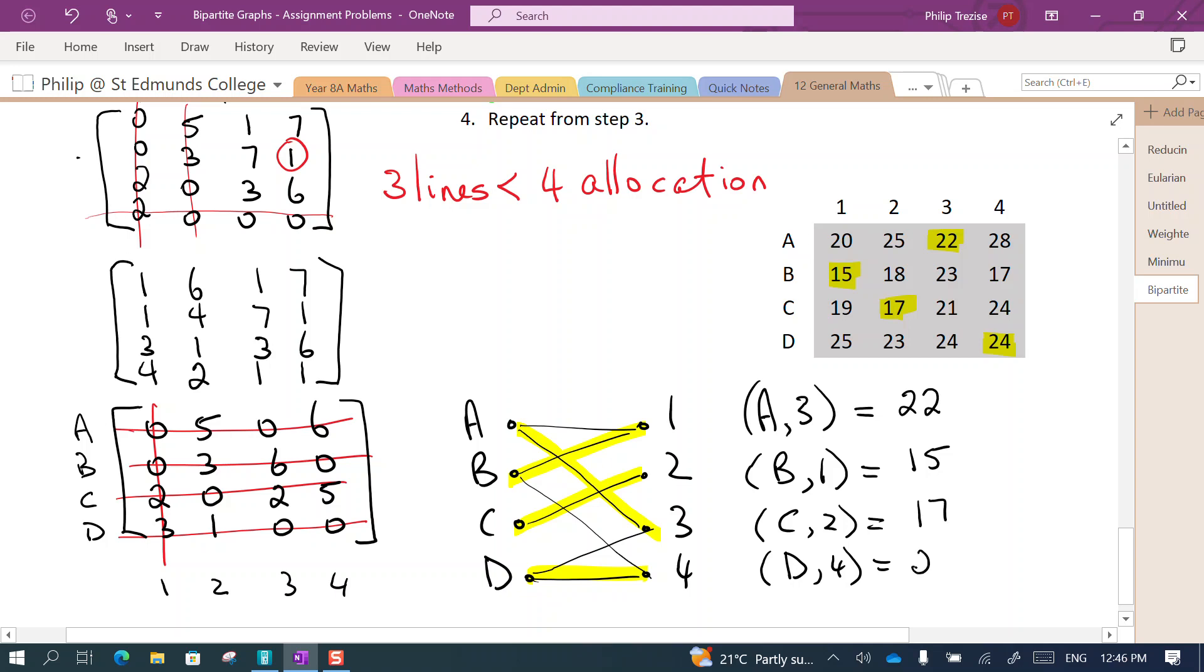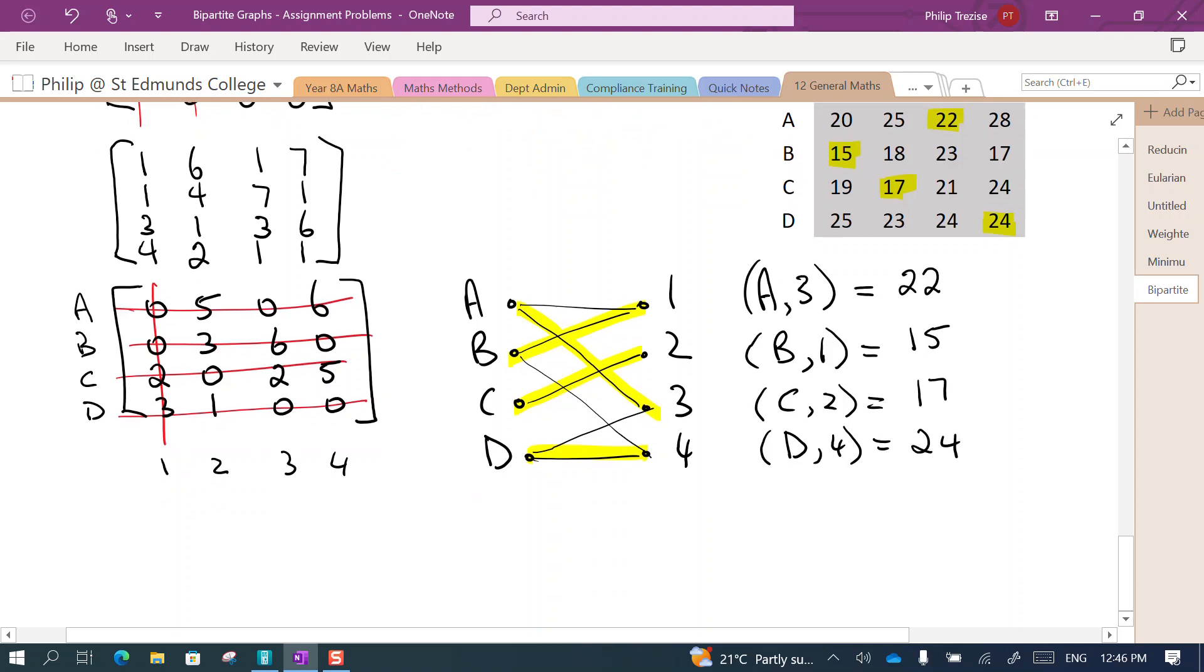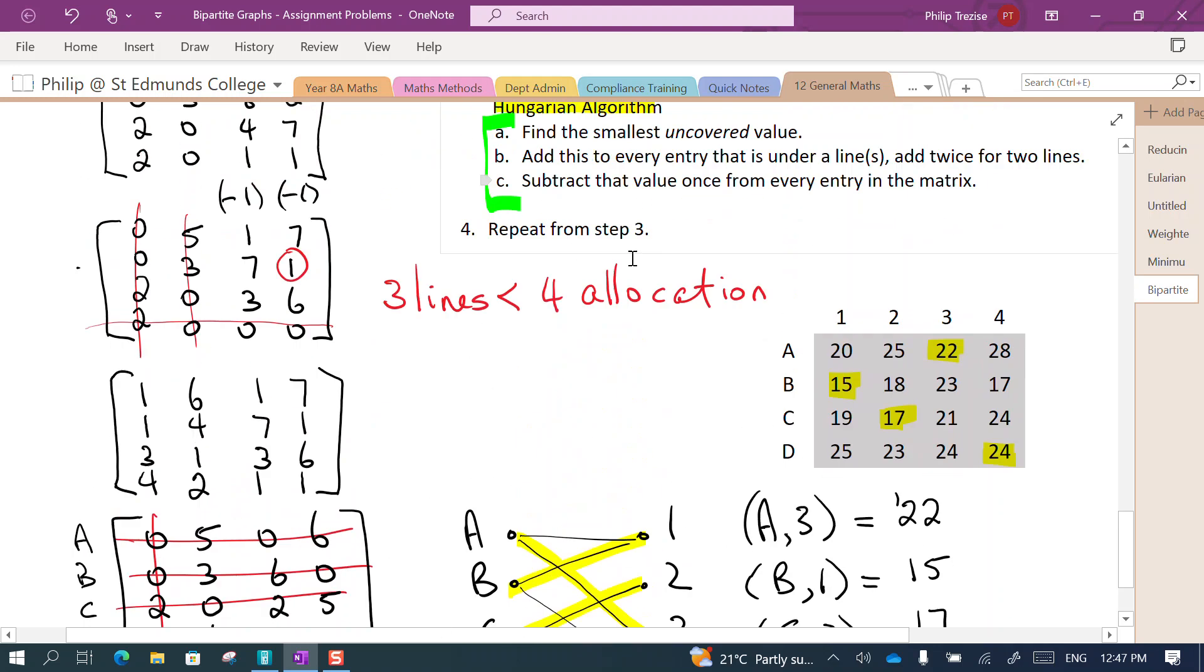And what do we end up with? Two and five are seven, and seven are fourteen, and four is eighteen, carry the one. Three, four, five, two are seven. Our total cost to allocate the jobs in this way is 78, and that is how we use the Hungarian algorithm.